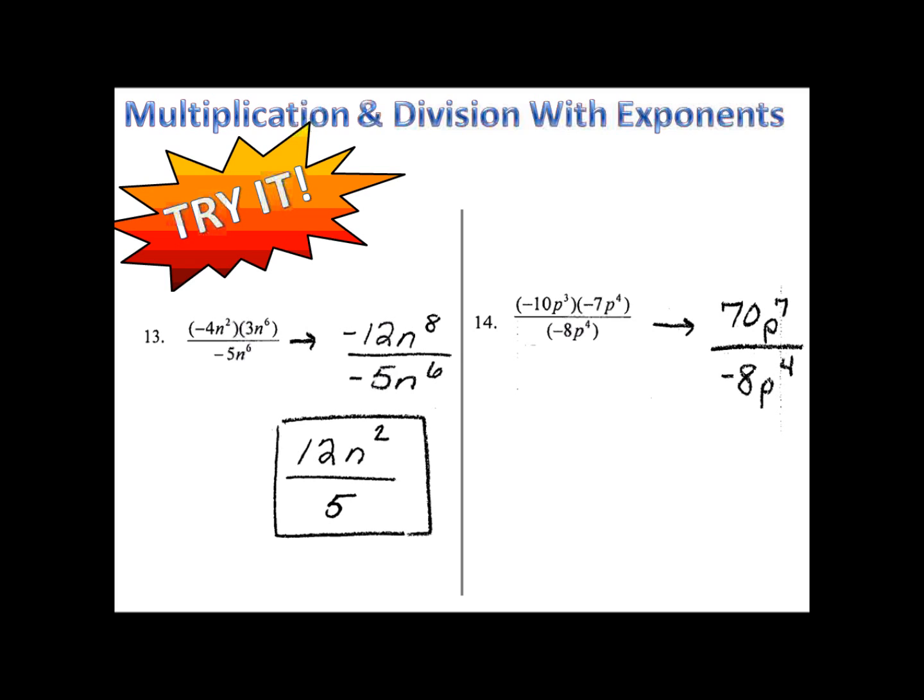Now we can go ahead and simplify. We'll reduce our fraction and then we'll divide our p's. 70 divided by negative 8 becomes negative 35 over 4, and we'll look at our p's. 7 minus 4 is 3, so we have negative 35p to the third over 4.